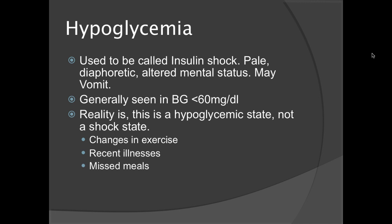Hypoglycemia used to be called insulin shock. Your patient will present pale, diaphoretic, with an altered mental status. They tend to be prone to vomiting. These signs are generally seen with blood glucoses less than 60 mg per deciliter. Usually the altered mental status won't kick in until about 40 mg per deciliter, but every patient is different — some will be altered right at 60. This is a hypoglycemic state, not a shock state. It can be caused by changes in exercise, a recent illness, or even missed meals, so you have to get a very detailed history.